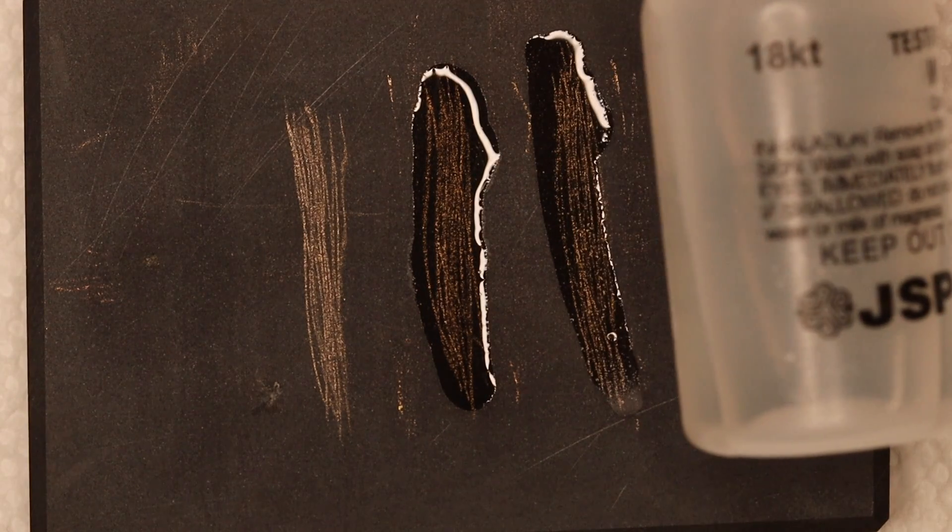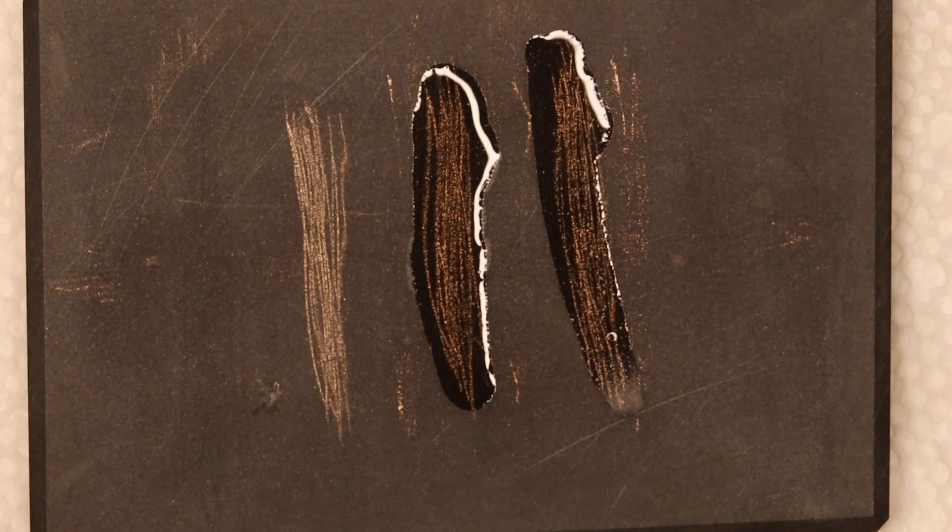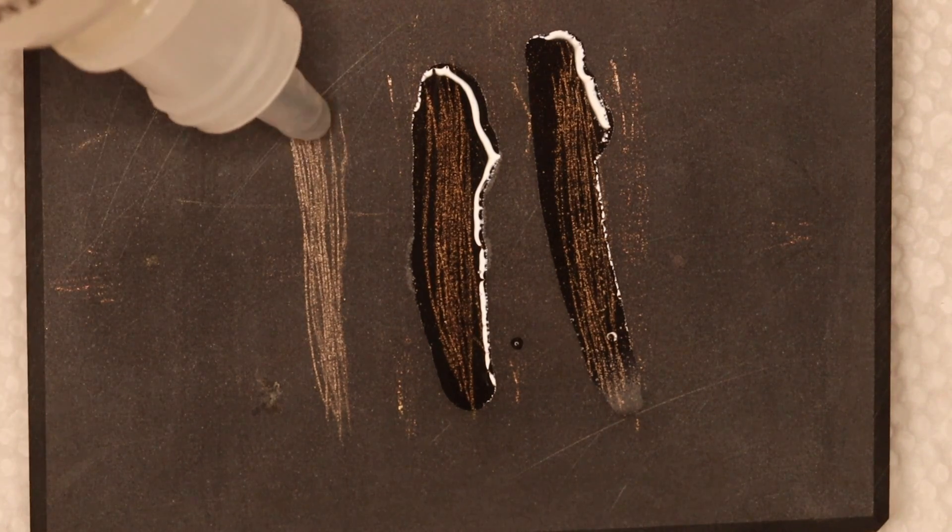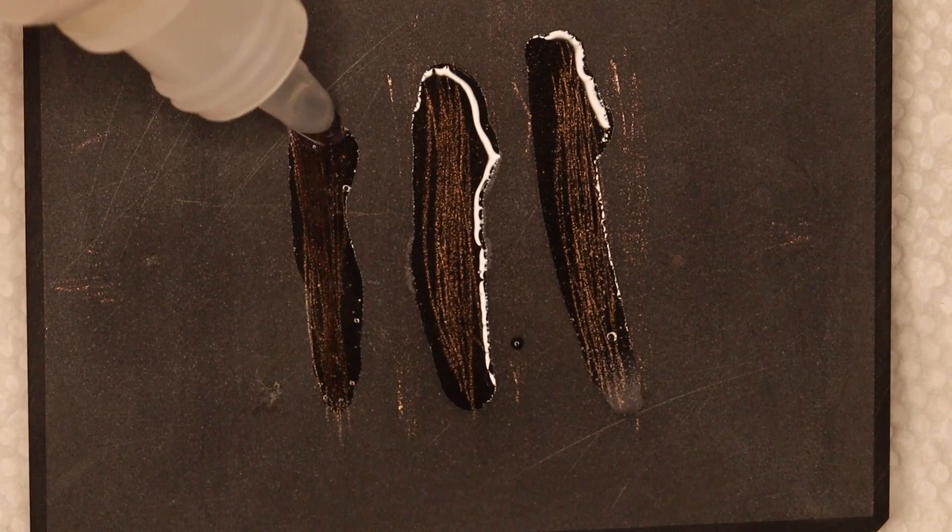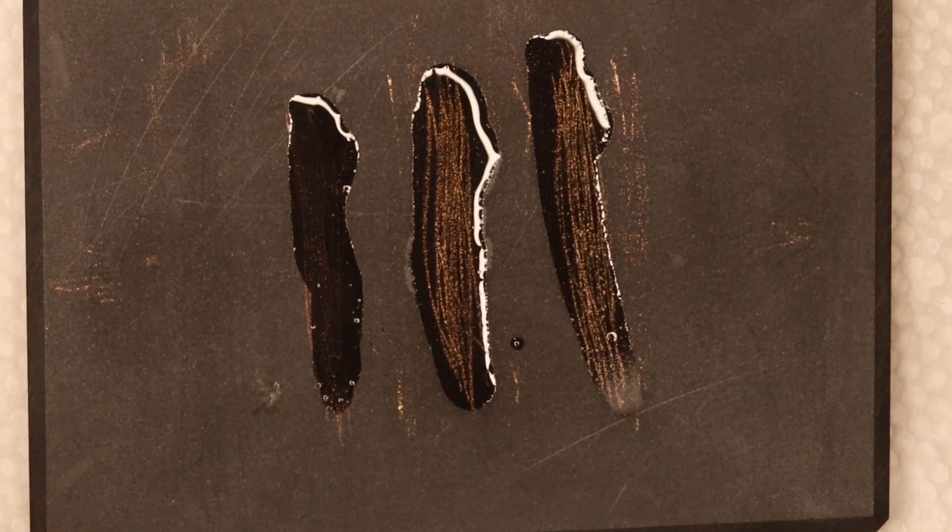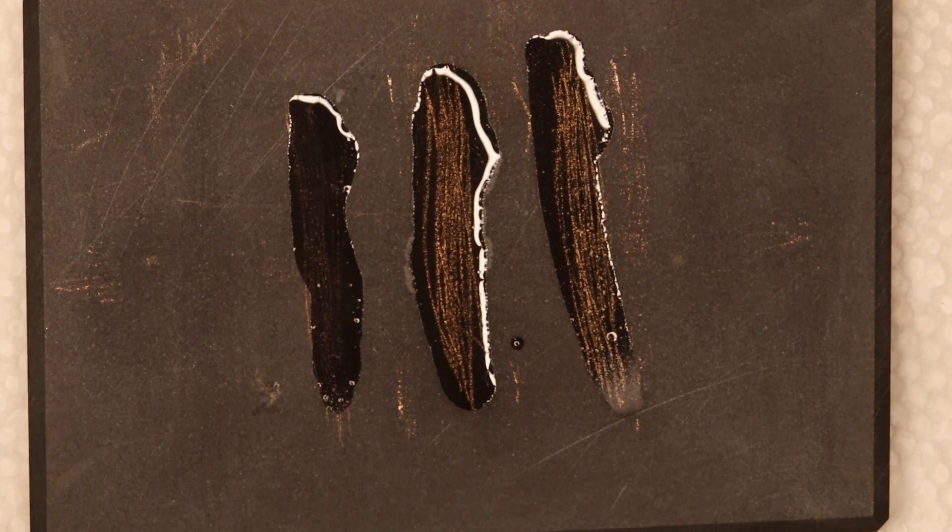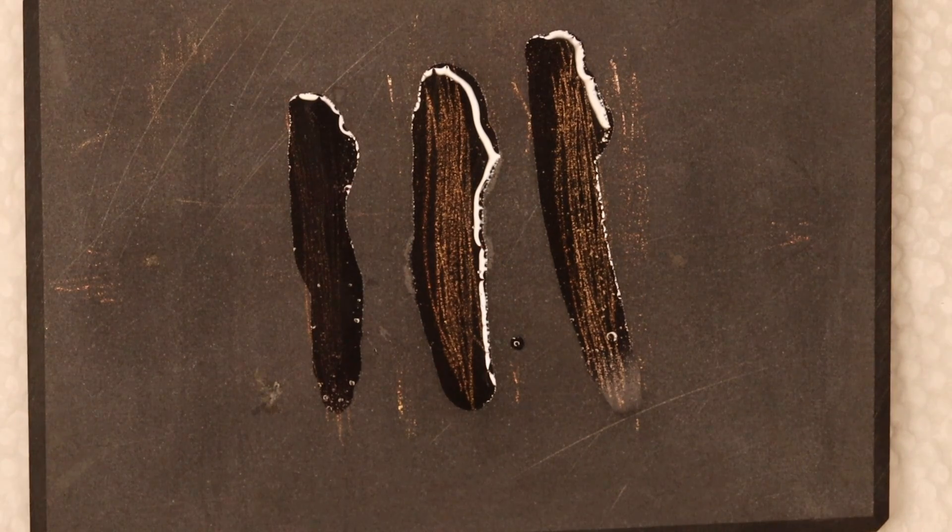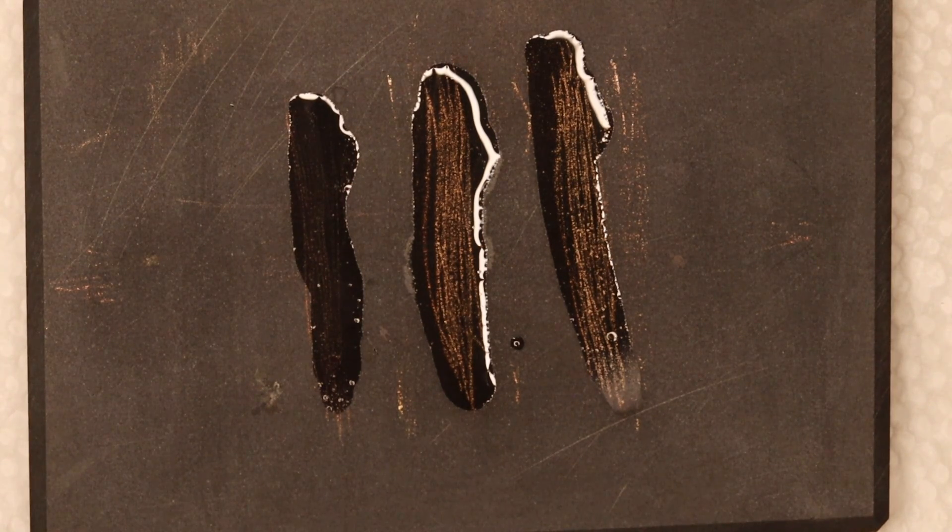We have this 18K acid. Let's go ahead and apply that to the third line. And there we go. And looks like that ate it away pretty quick. I do not see that gold line at all. Looks like it's vanished completely.